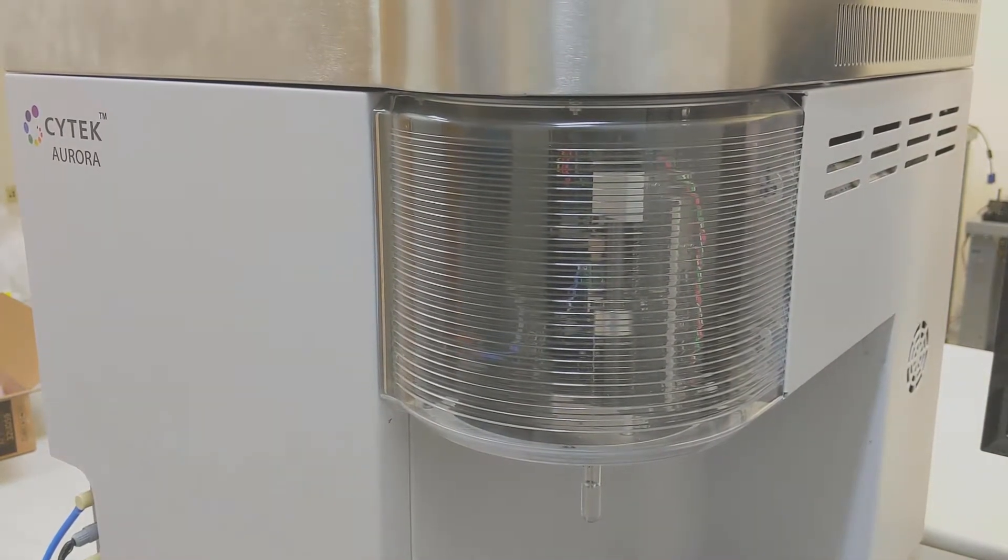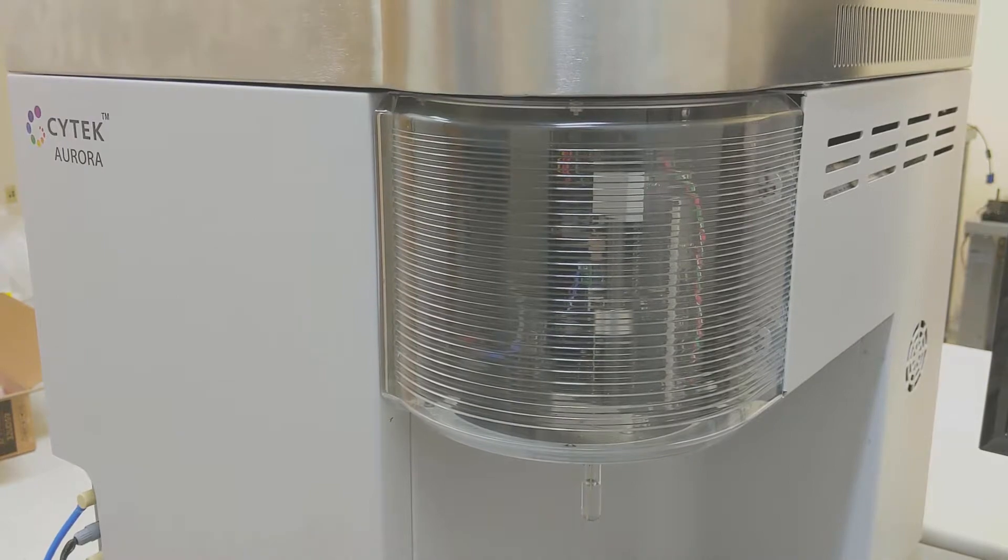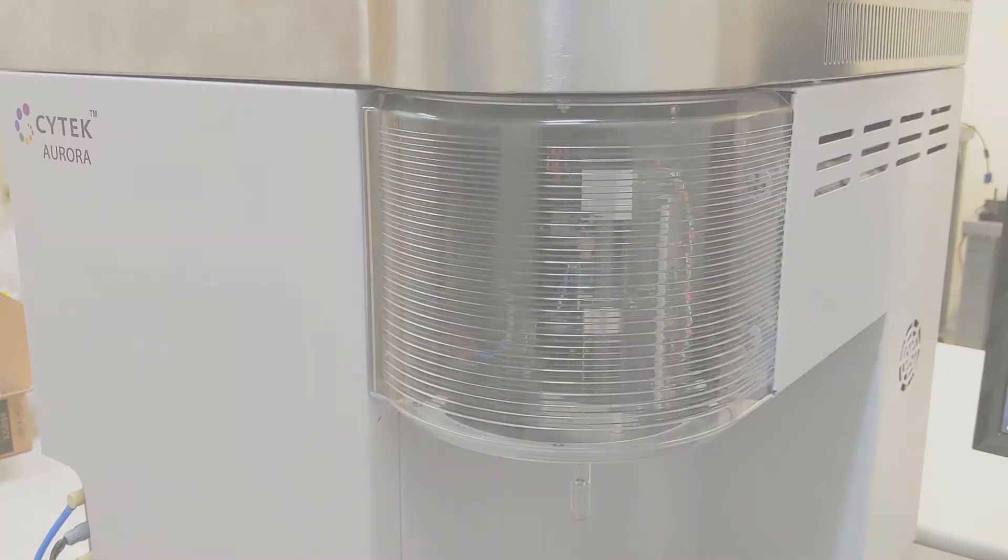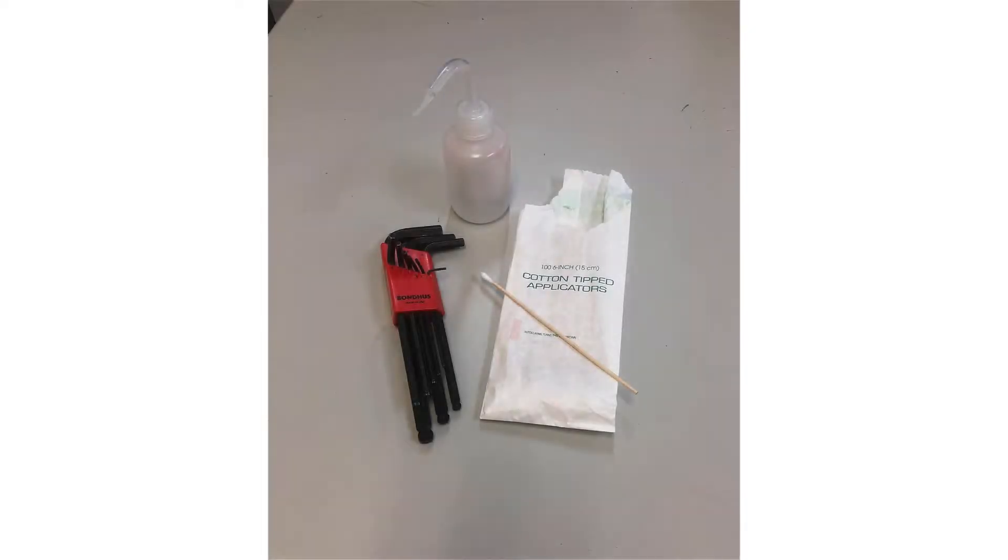Often this happens if salt builds up on the sit flag, which is what triggers the tube present or tube absent logic for the software. To get started you'll need a metric Allen wrench M1 size, some cotton-tipped applicators, and some DI water.